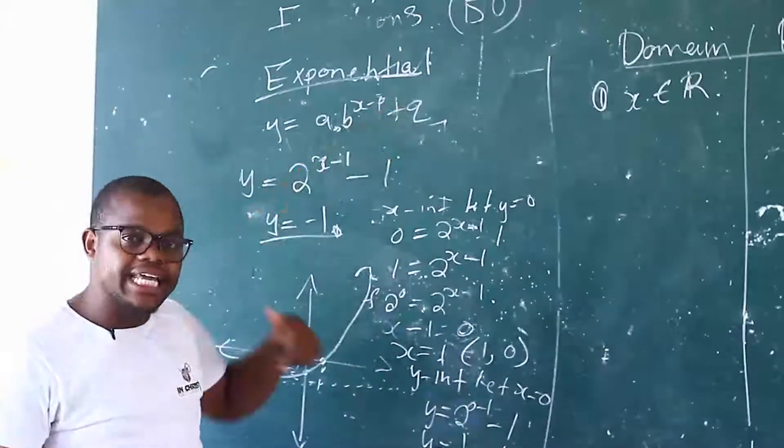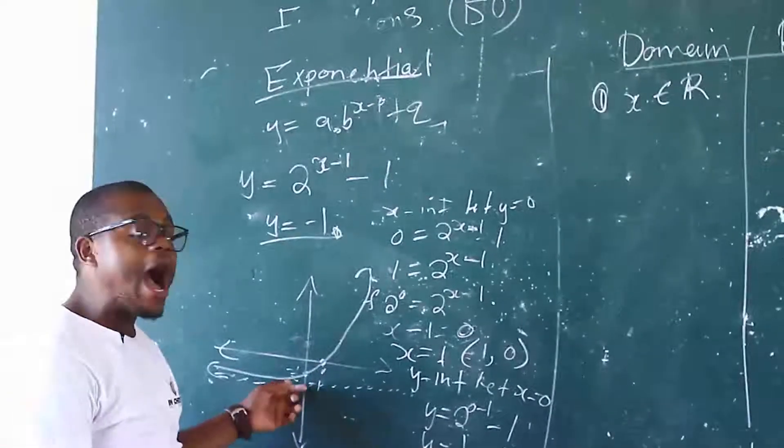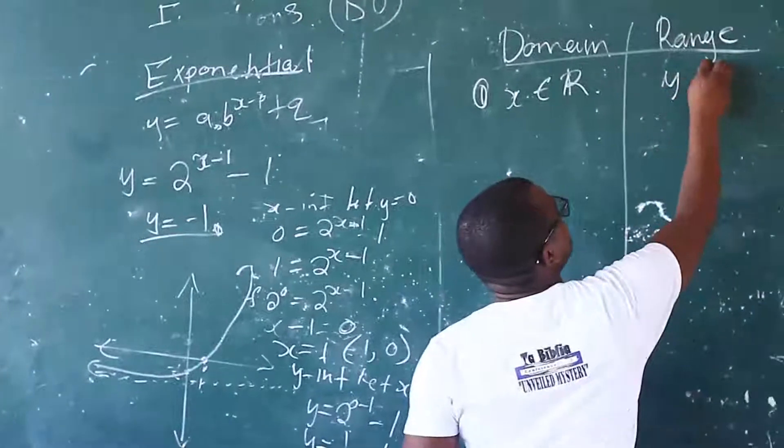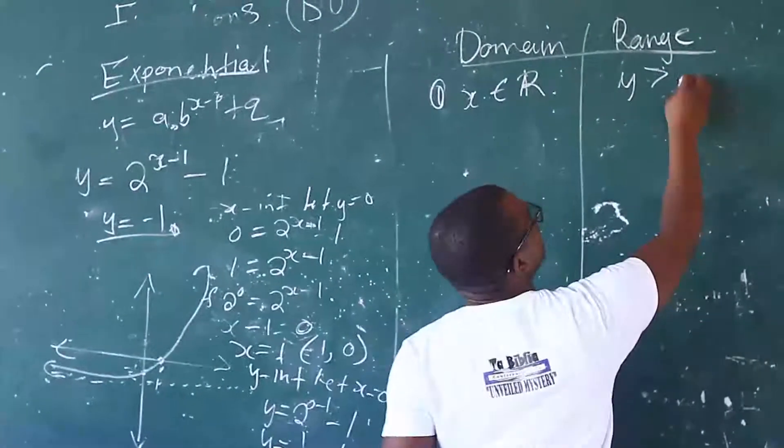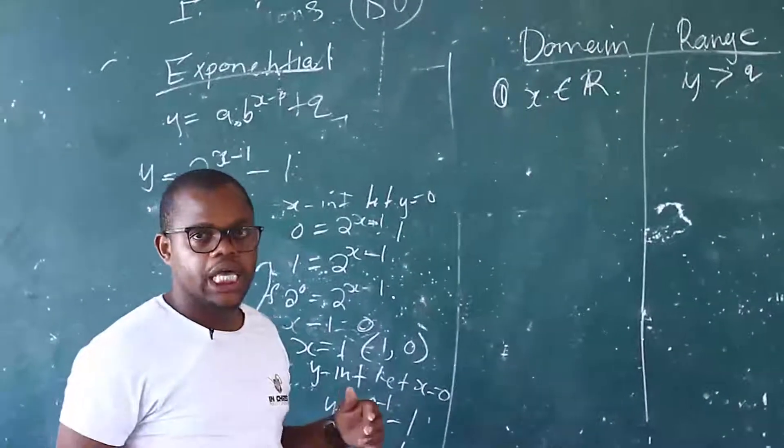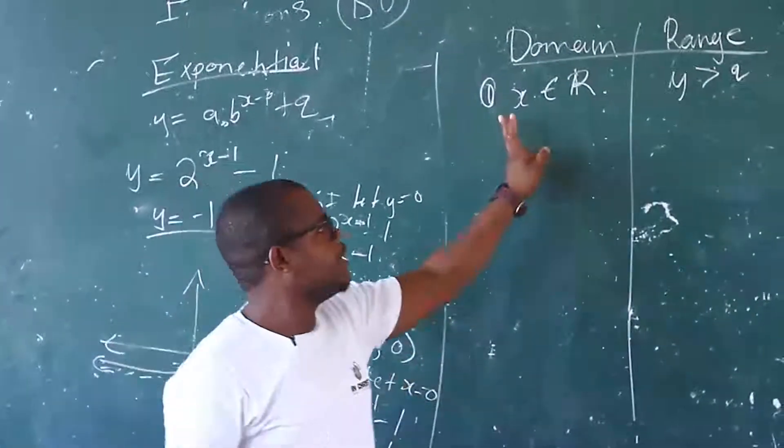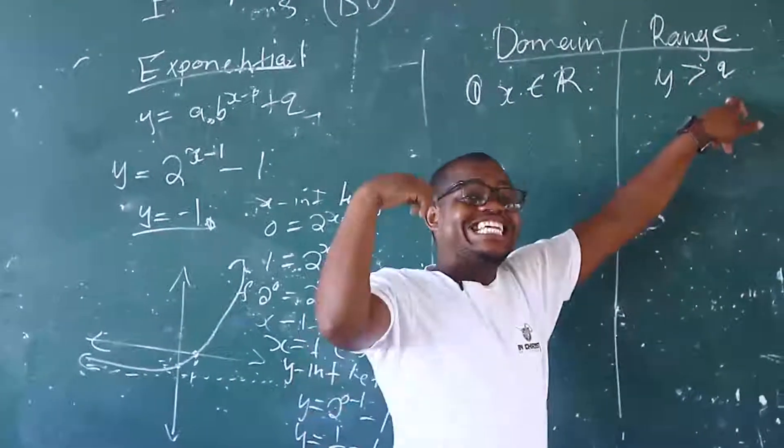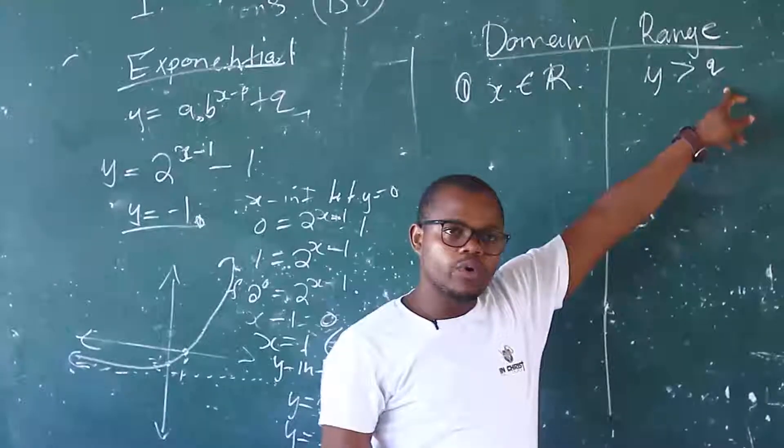But Y, the range. The range is Y must be what? Greater. So Y must be greater than Q. Then the asymptote is Q. Okay? That is the range. Domain for the exponential is X an element of real numbers. But Y must be greater than Q.